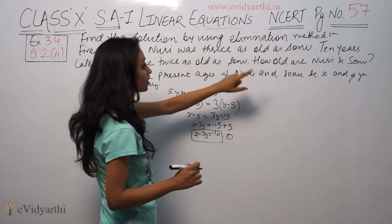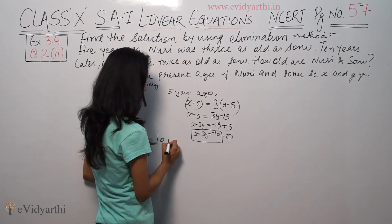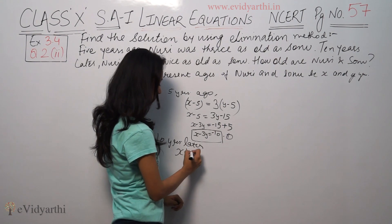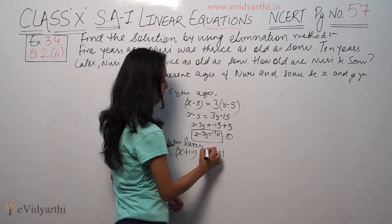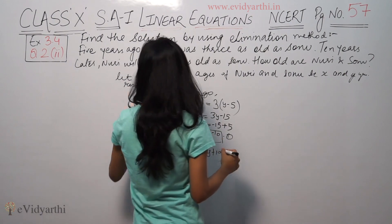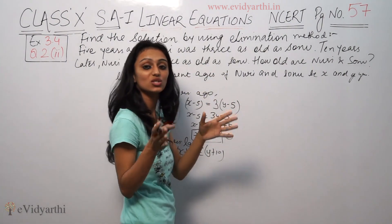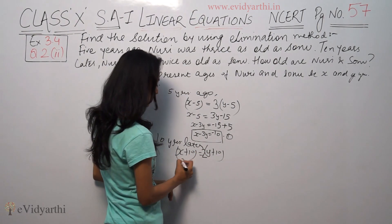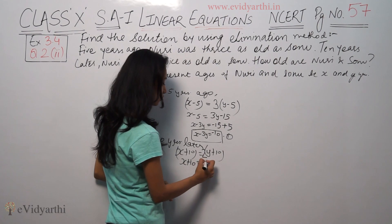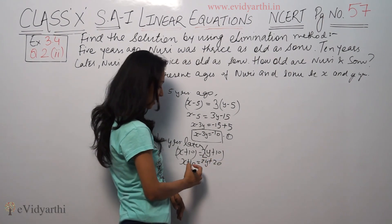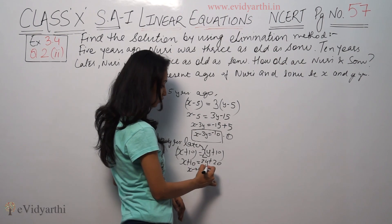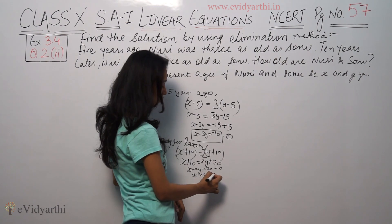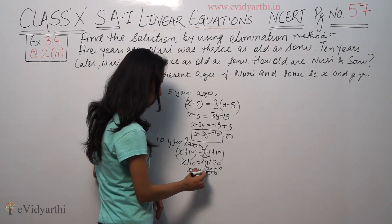Then, 10 years later. 10 years later, x plus 10 is equal to 2 times y plus 20. Which means x minus 2y is equal to 10. This is our second equation.